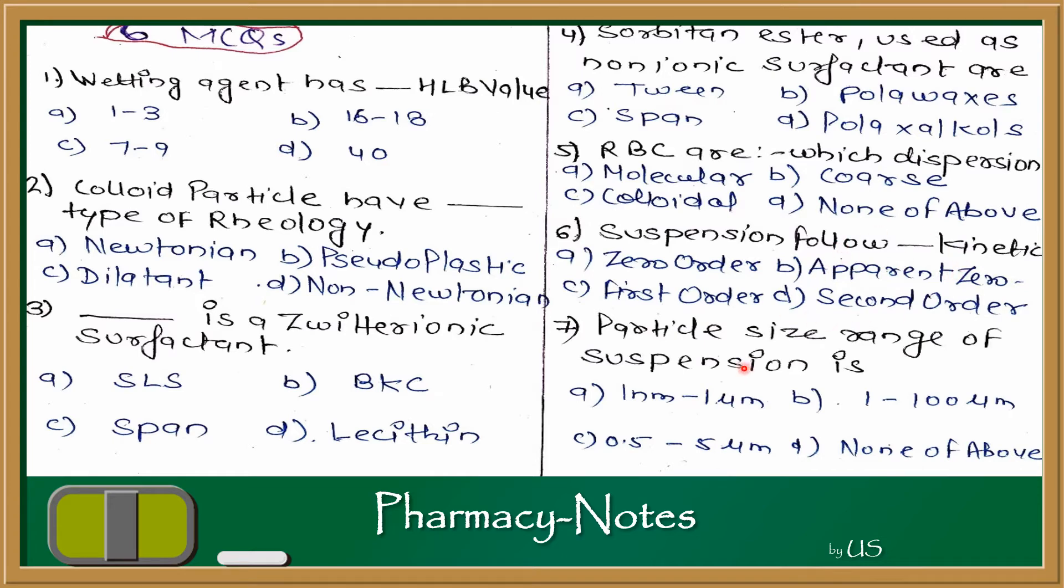Question number 7: Particle size range of suspension. If you remember, in the beginning I had told the particle size of suspension - it was 0.5 to 5 micrometer. This answer would be C, 0.5 to 5 micrometer. I hope all of you will be right.